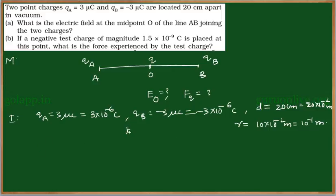The medium constant K is equal to 9 × 10⁹ N·m² per coulomb squared. Now we come to the resolving part to find the field and force.